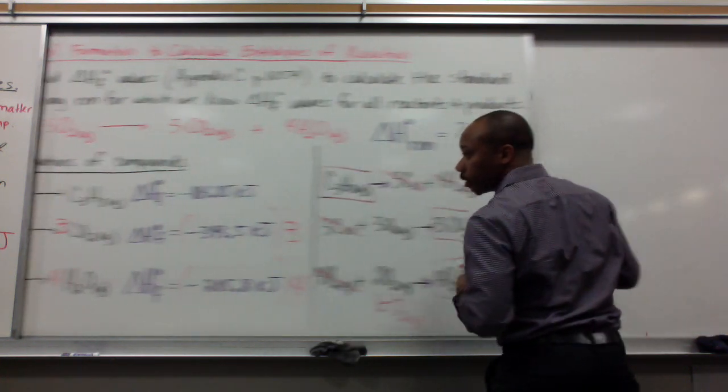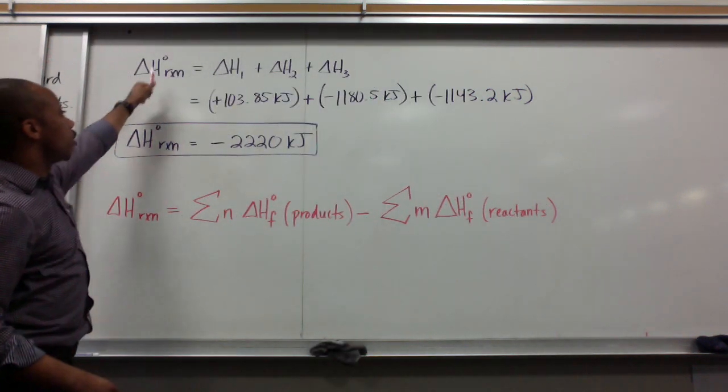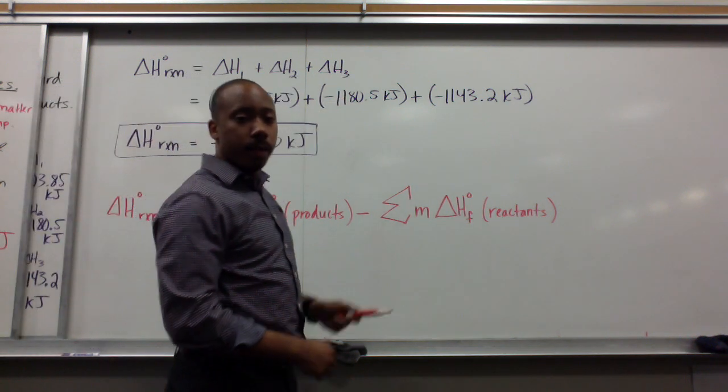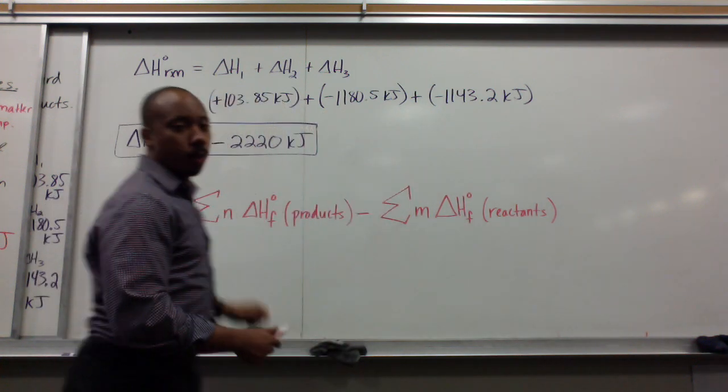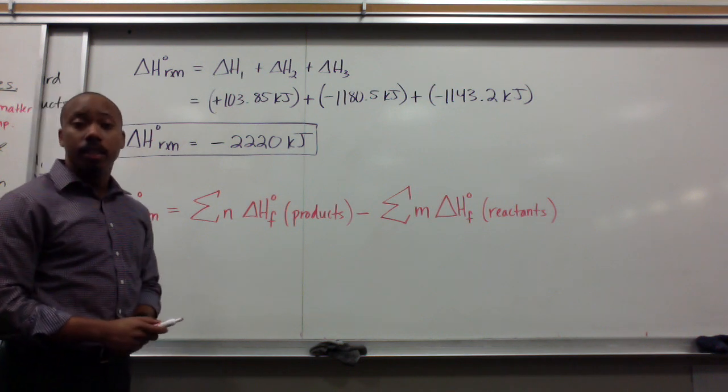Now here, when we do that. So we get delta H⁰ of the reaction is equal to delta H₁, delta H₂, and delta H₃, all added together. When we do that, we get negative 2,220 kilojoules.